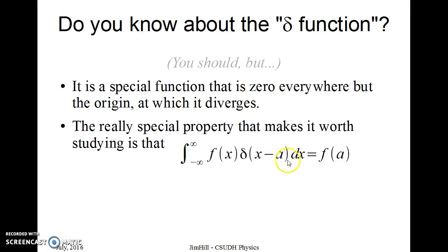And here, I've written delta x minus a, so delta diverges at the origin, that means x minus a would be the origin, so x would be equal to a, gives me the value of f at a. There's a lot more to the delta function, and we'll talk about that in great detail in class, even though hopefully you've seen it at least some level.